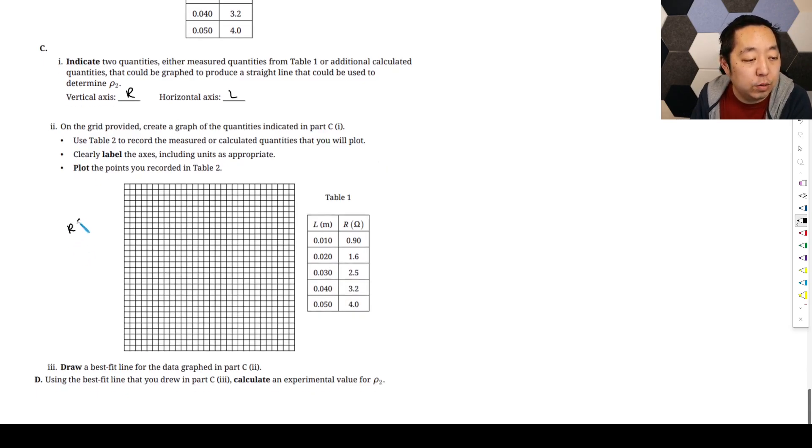So vertical axis is R, which is going to be in ohms. Horizontal axis is L, which is in meters. This is one of those where they just give you a marking so you have to mark it out. Rather than bore you with that, I'll do the markings and show you what I come up with.